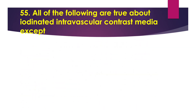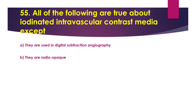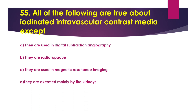Question 55: Which of the following is true about iodinated intravascular contrast medium, EXCEPT — Option A: they are used in digital subtraction angiography. Option B: they are radiopaque. Option C: they are used in MRI. Option D: they are excreted mainly by the kidneys. The answer is option C — they are used in MRI — is false. Iodinated contrast medium is used in all other special investigations and CT, except MRI. In MRI, we use a paramagnetic substance, the best example being gadolinium.